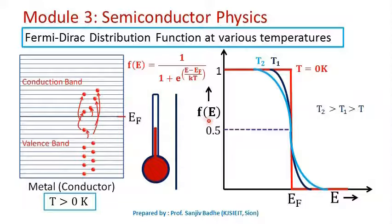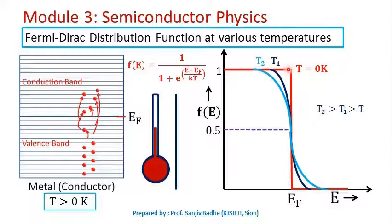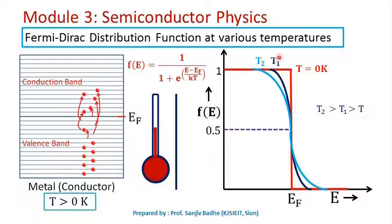If we plot the probability of occupancy F(E) versus energy level E, at 0 Kelvin all energy levels below the Fermi energy level are completely filled, so F(E) = 1, and all energy levels above are completely empty, so F(E) = 0. As temperature increases to T1 > 0 K, some empty levels are created below the Fermi energy level and filled levels appear above it.